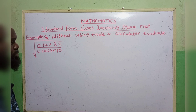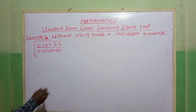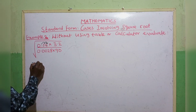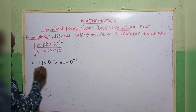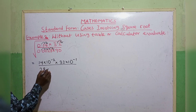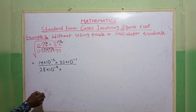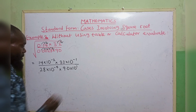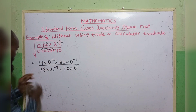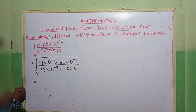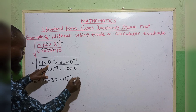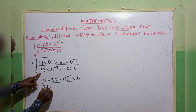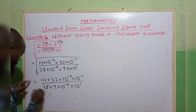Example 3, using a table or calculator, evaluate the expression. To evaluate this, let's change each term to standard form: 0.14 becomes 14 times 10 raised to the power of minus 2; 1.32 becomes 132 times 10 raised to the power of minus 1; divided by 0.0028 which becomes 28 times 10 raised to the power of minus 4; and 90, which can be written as 9.0 times 10 raised to the power of 1. Then introduce the square root over the whole expression.